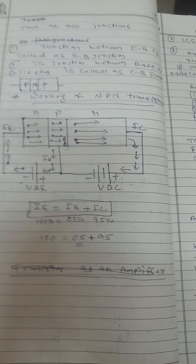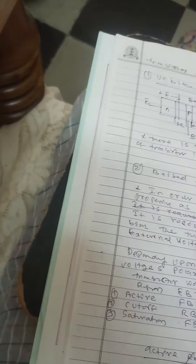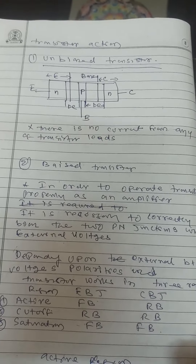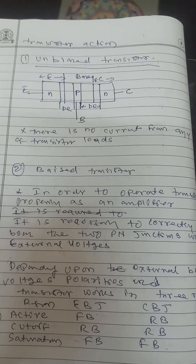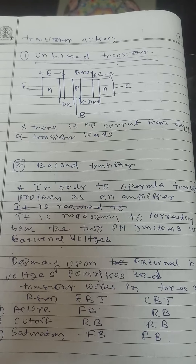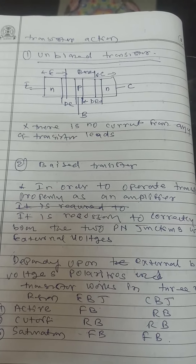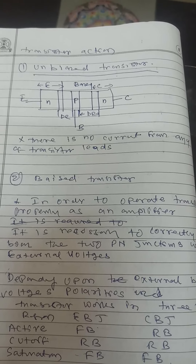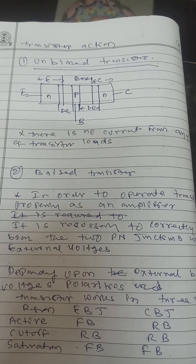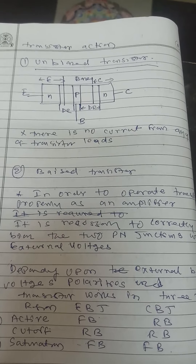In P-type, holes are the majority charge carriers, and in N-type, electrons are the majority charge carriers. It is a current-controlled device. Now let us see the configurations and what amplification means. A very important use of the transistor is as an amplifier. Biasing is required to operate the transistor in a stable manner and give amplification at the output.